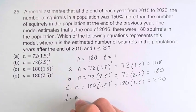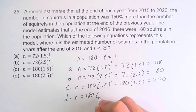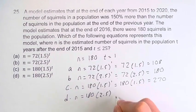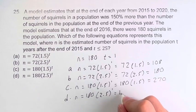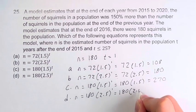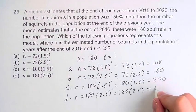And d, you can probably see by now, is not going to line up, but let's do it anyways. 180 times 2.5 to the 1 is equal to 180 times 2.5, and this is equal to 450.